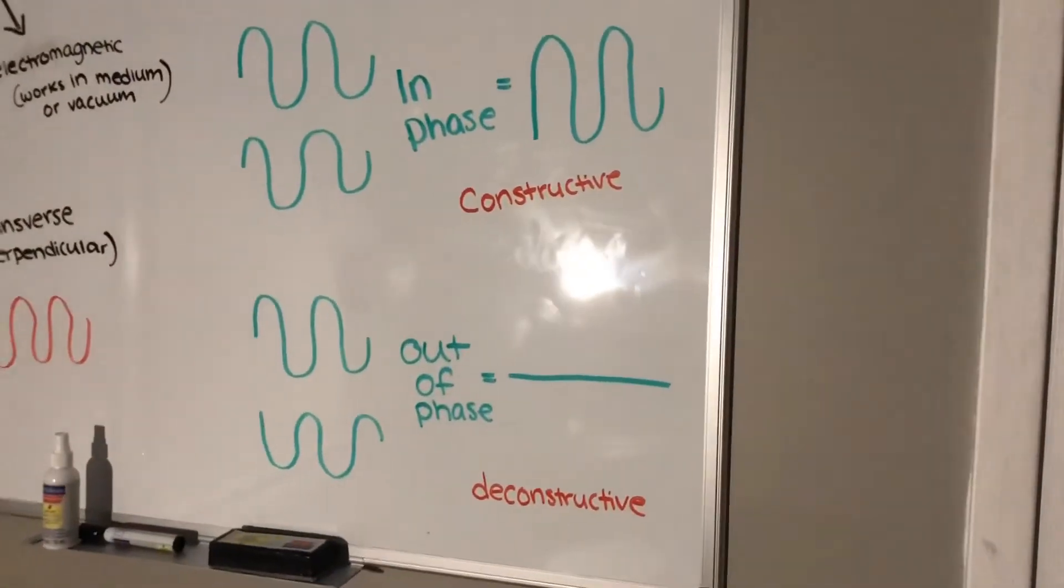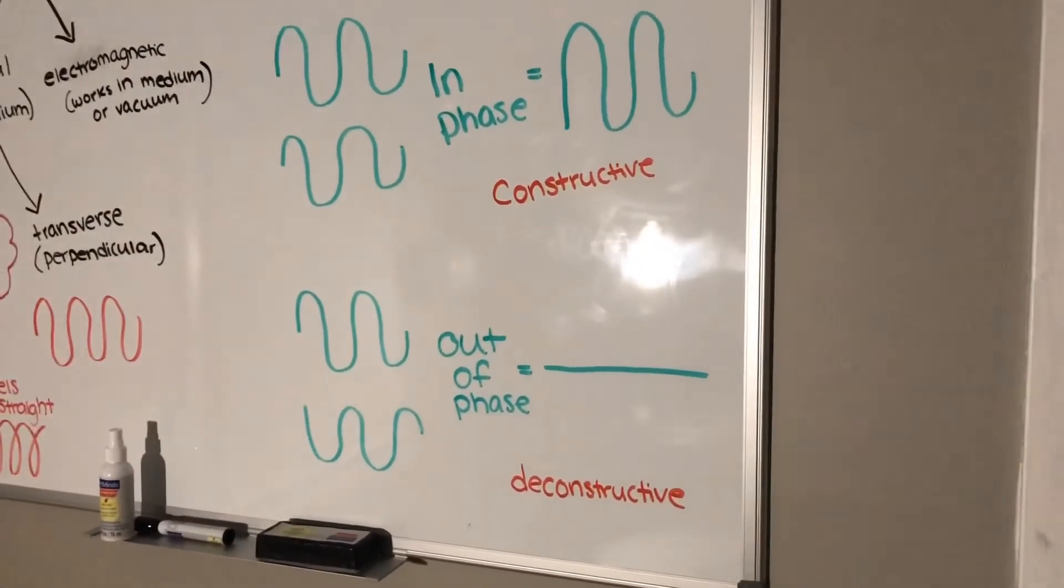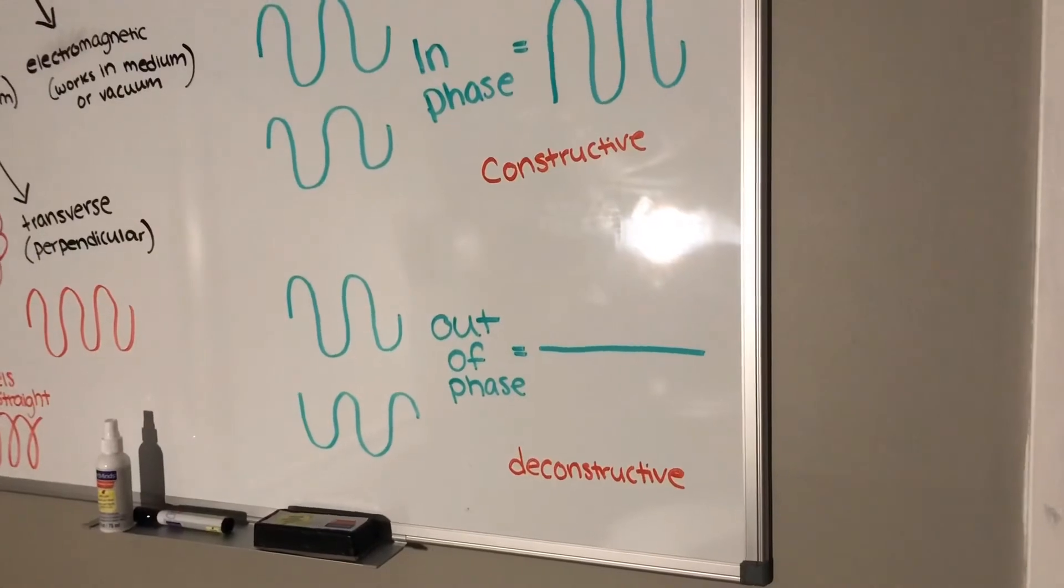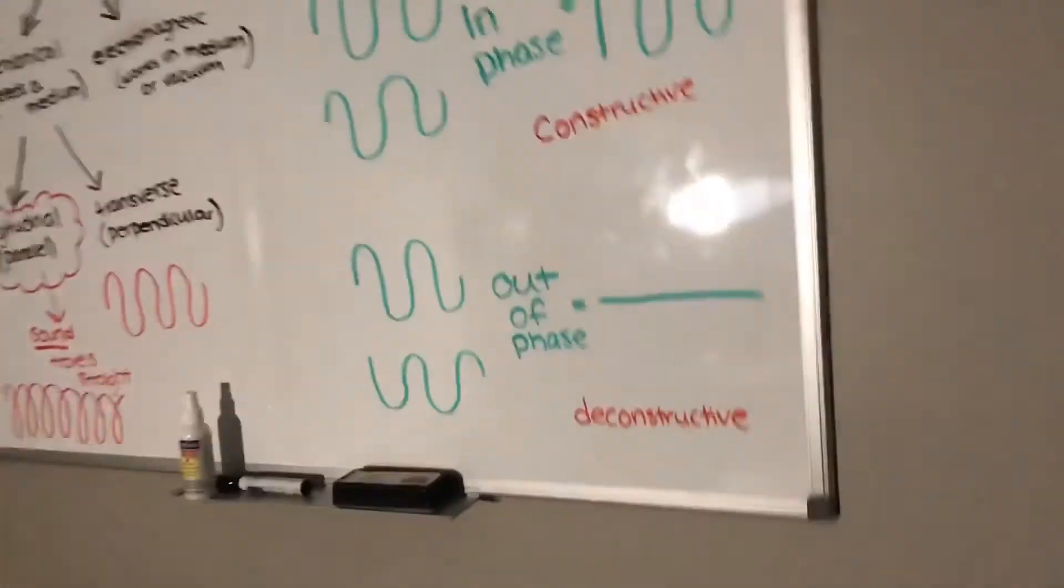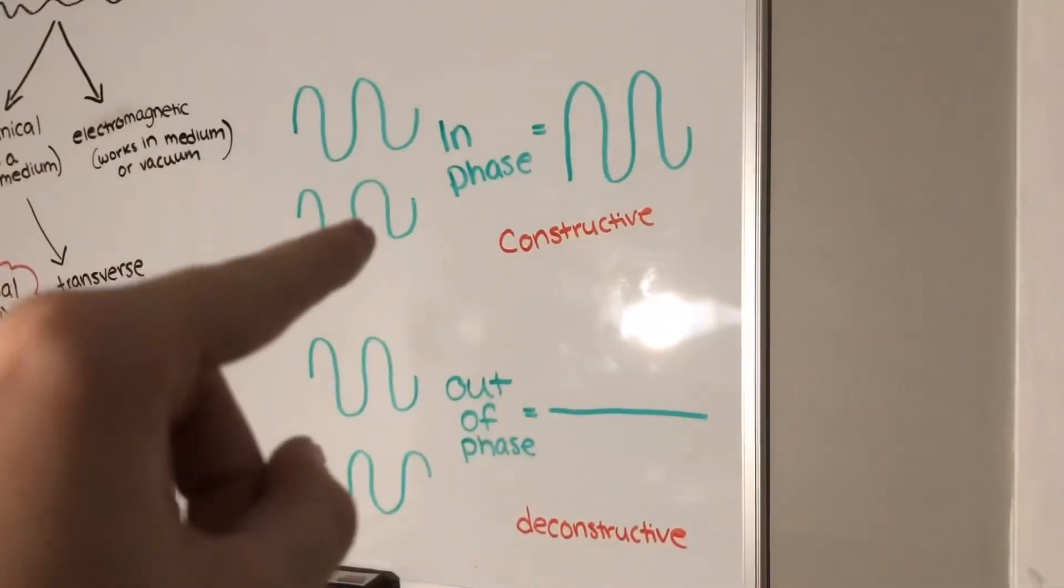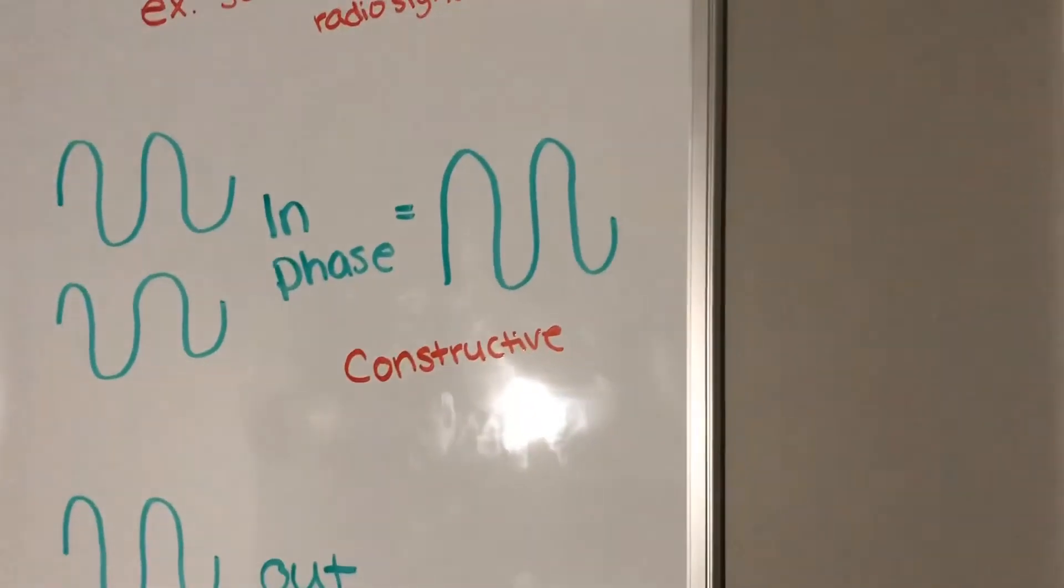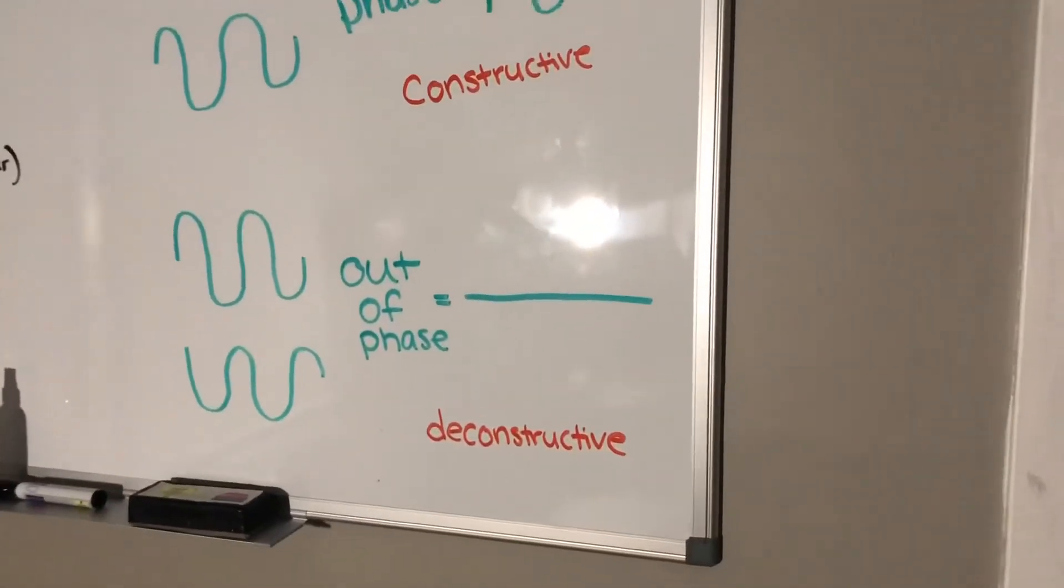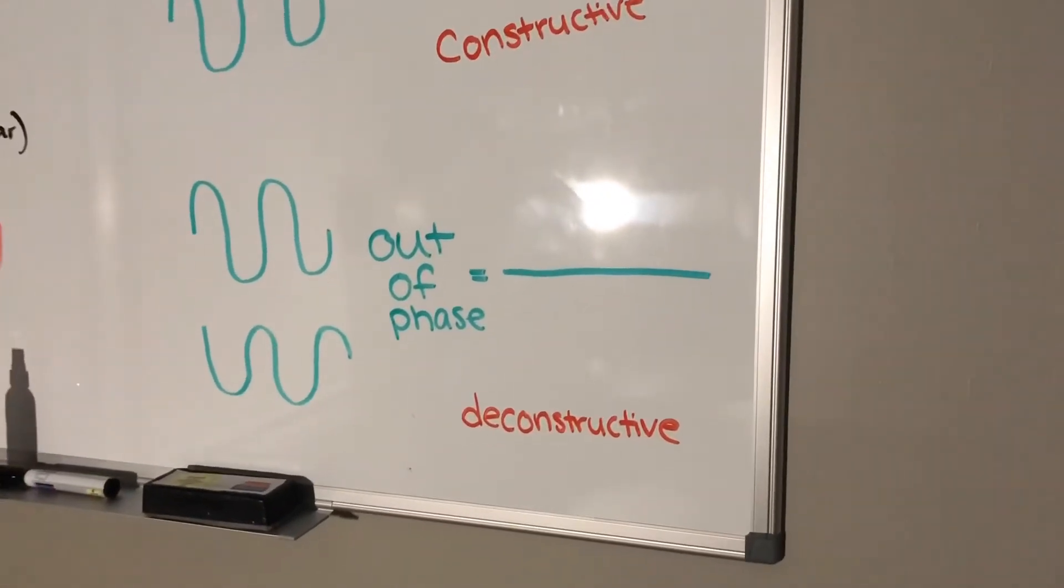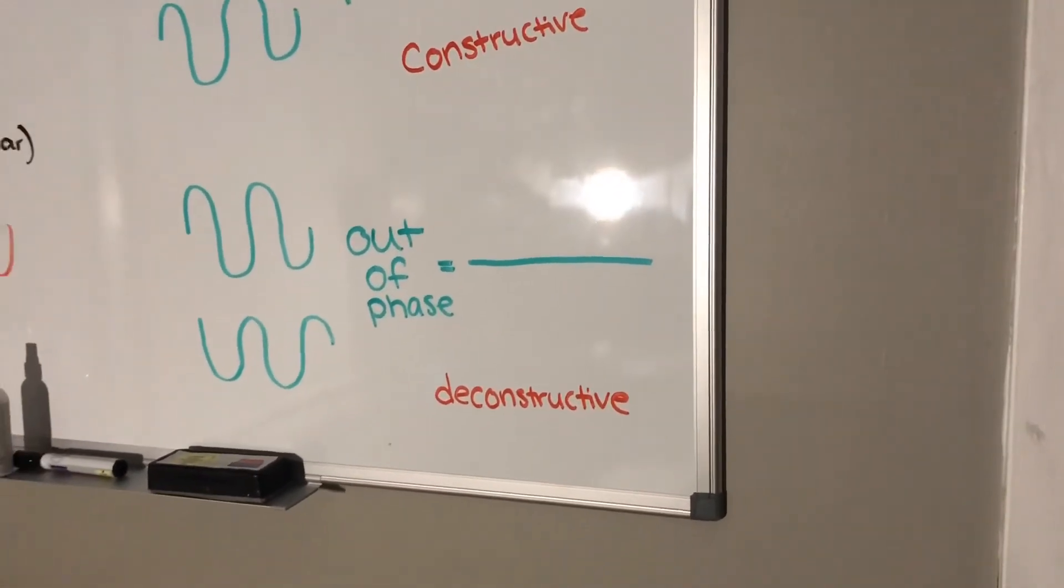Here we have in-phase and out-of-phase waves. In-phase, waves peak at the same exact time as seen above, and they both go up at the same time, and down, and up, and down, and that would be known as constructive. Then, out-of-phase, they go in opposite directions, and it results in a deconstructive wave.